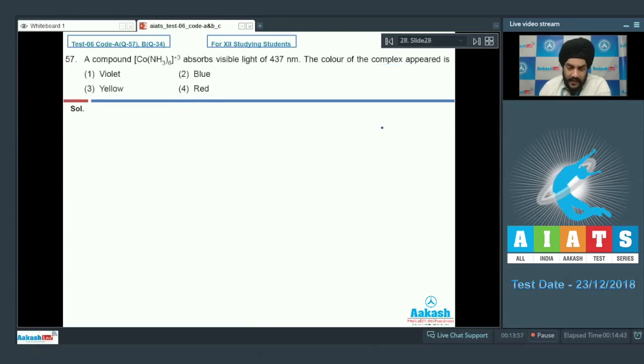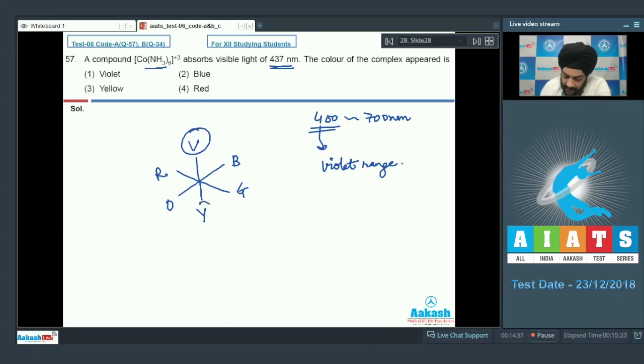Question number 57: a compound [Co(NH3)6]3+ absorbs visible light of 437 nanometers. What color does the complex appear? The visible region lies around 400 to 700 nanometers, so 437 nanometers lies in the violet range. If the color absorbed is violet, the complementary color emitted will be yellow. We have to select option 3 as the correct answer.